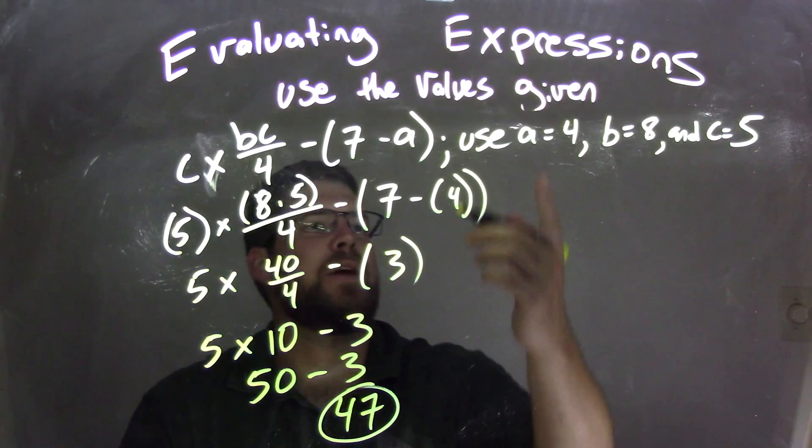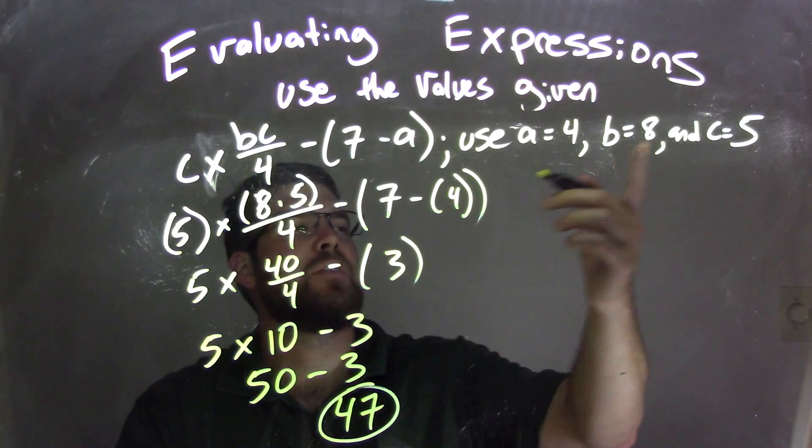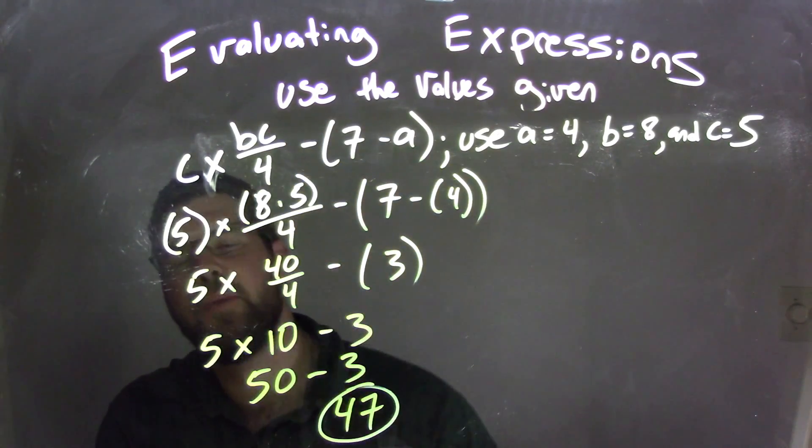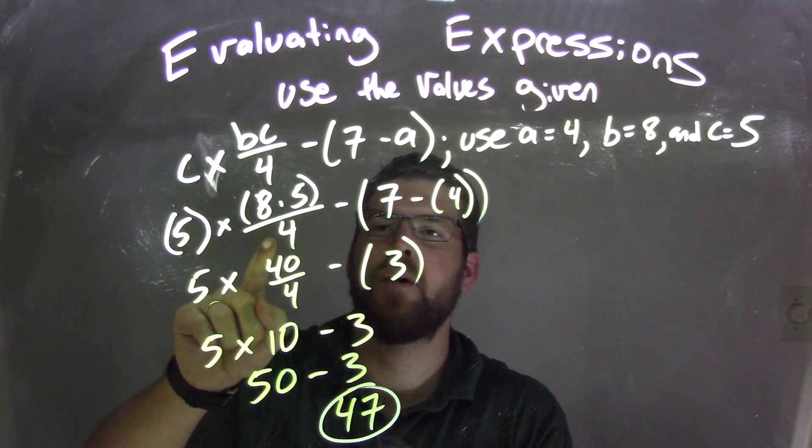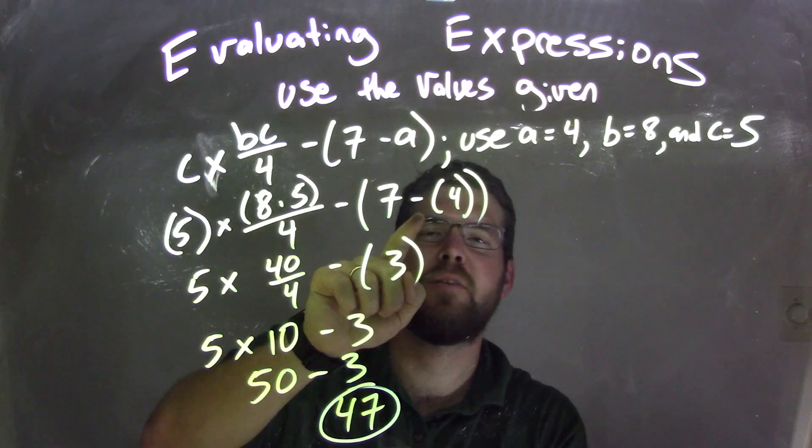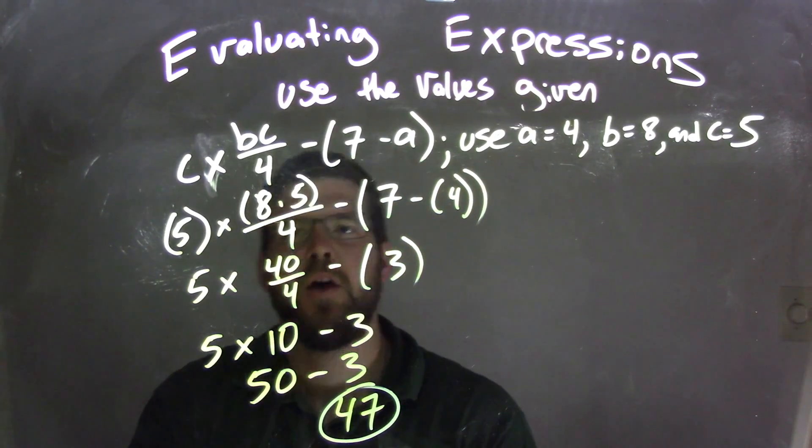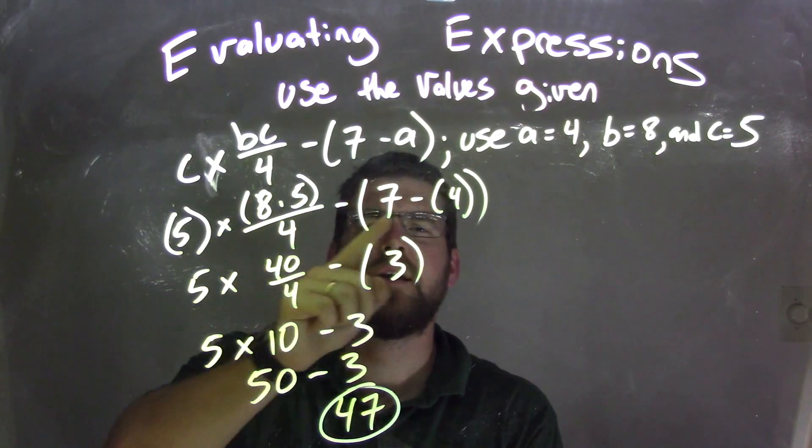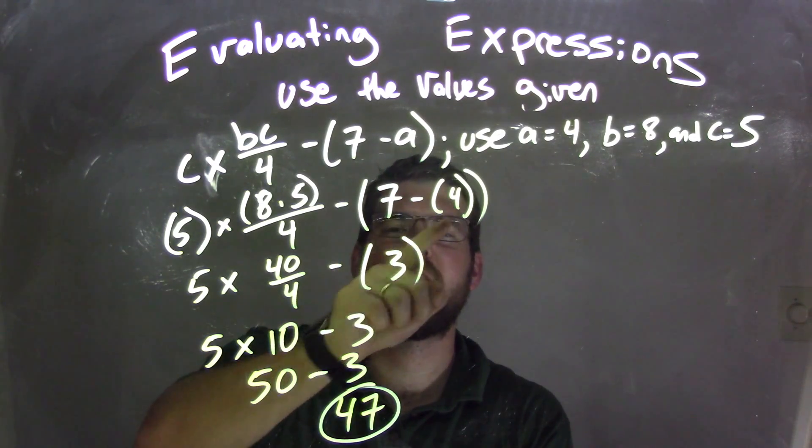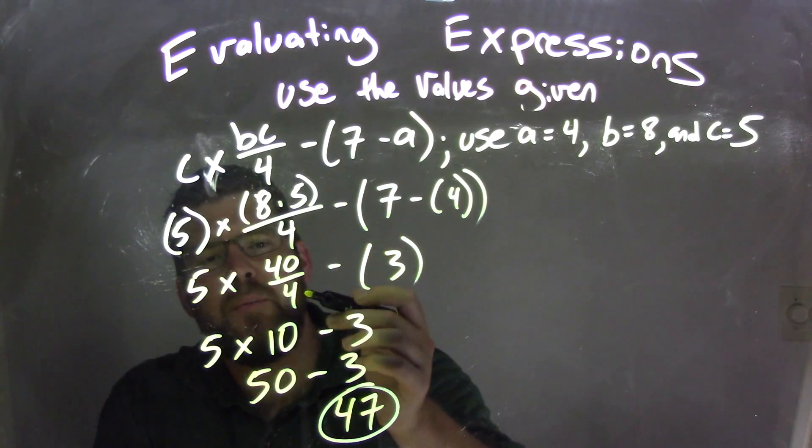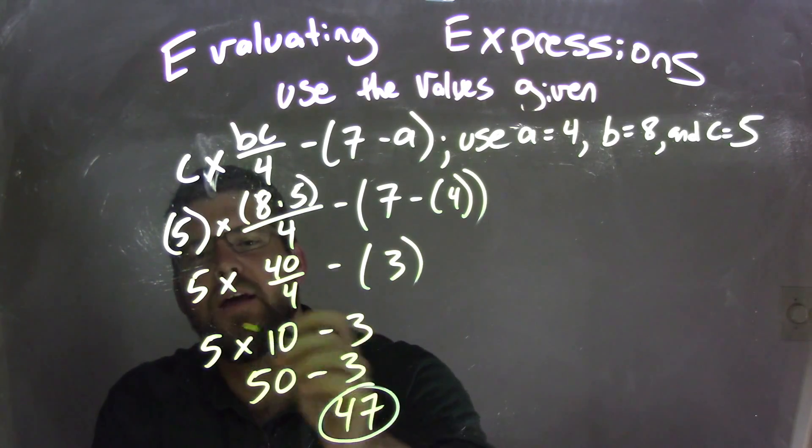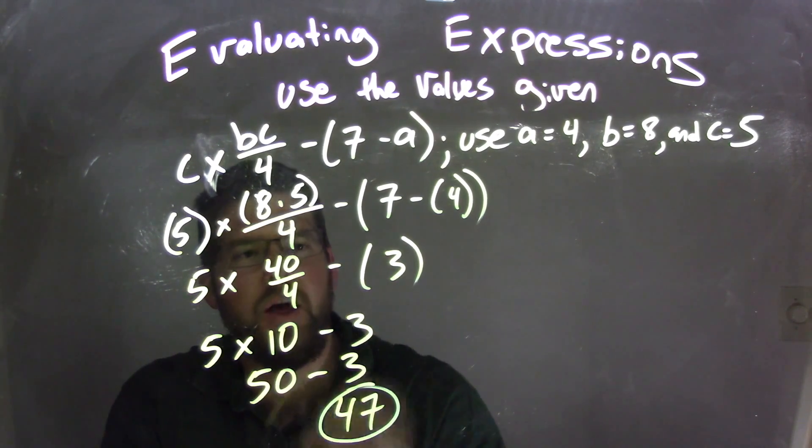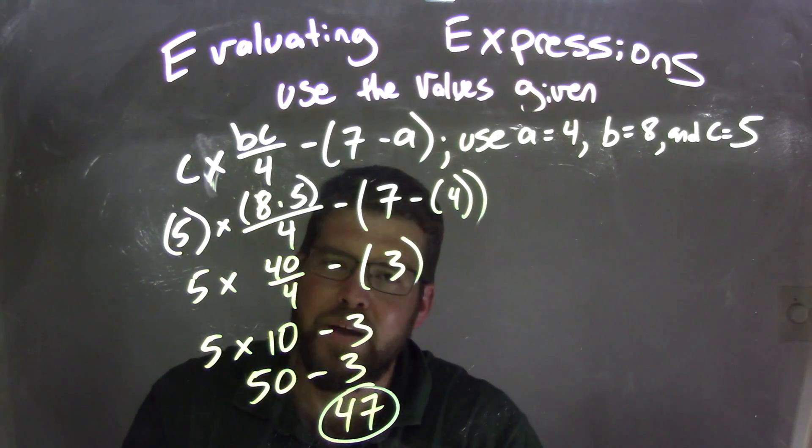So let's recap this. We have our variables, a was 4, b is 8, and c is 5. We substituted them in. c became 5, b times c, 8 times 5, divided by 4, minus 7 minus 4, and that's in our parentheses. We simplified 8 times 5 into 40, and inside this parentheses, 7 minus 4 was 3. 40 divided by 4, which is 10, that's next, and 5 times 10 was 50. We brought down the 3. 50 minus 3 is 47.